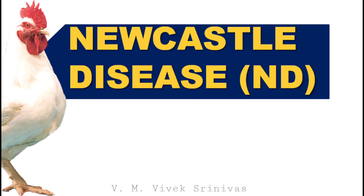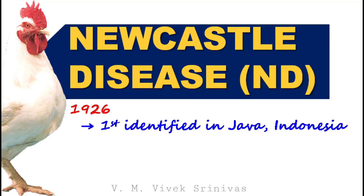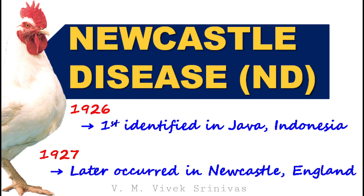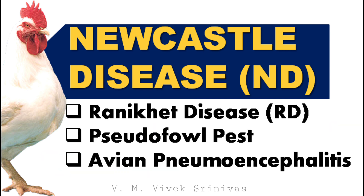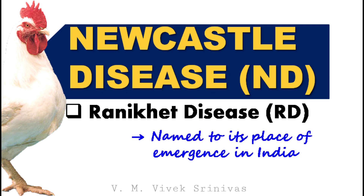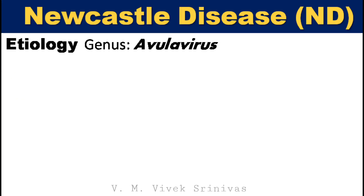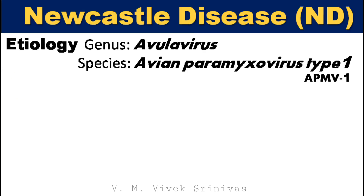Newcastle disease was first identified in Indonesia. Later it occurred in Newcastle, England, and was named after it. Other names for this infection are Ranikhet disease, pseudofowl pest, and avian pneumoencephalitis. The word Ranikhet is a place named after its place of emergence in India. This disease is caused by the genus Avulavirus and species avian paramyxovirus type 1.